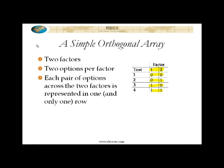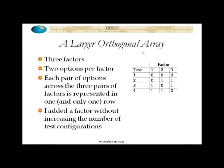Nothing amazing happening yet. But now here's where it starts to get interesting. I've got factor one, factor two, and factor three. So the possible pairs of factors are: one with two, one with three, and two with three. So I've got three possible pairs of factors.